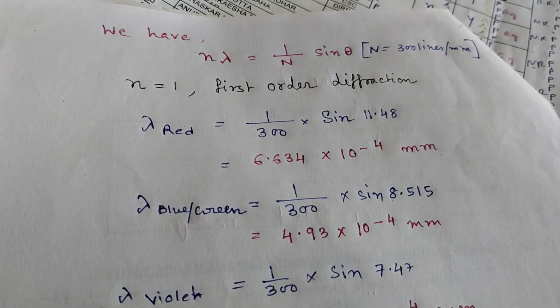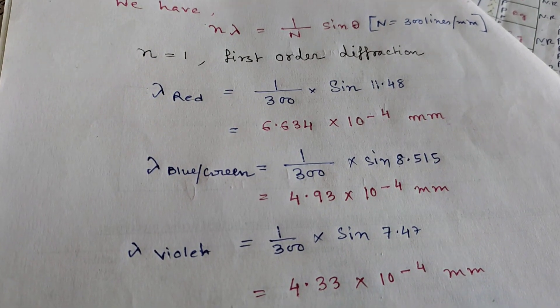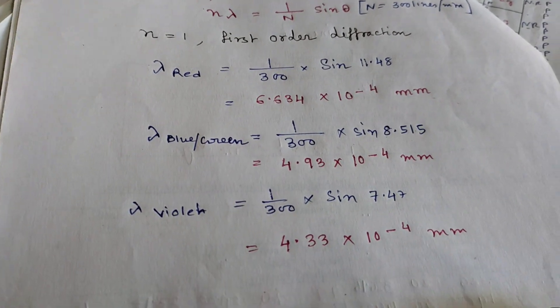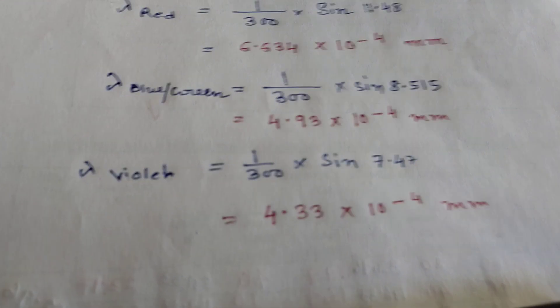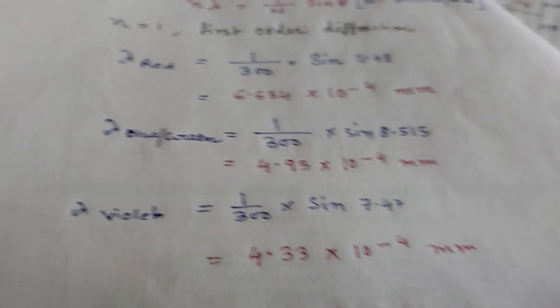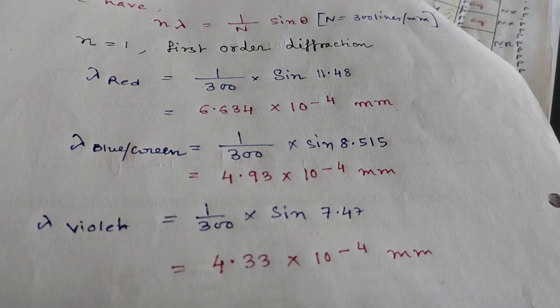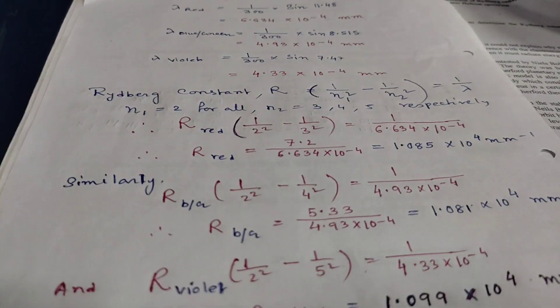Now, calculation part. To find Rydberg constant, we have to find lambda first, that means wavelength of each and every color first. So, we have formula and we are going to apply that to find lambda. So, I have calculated lambda red, lambda blue green and lambda violet.